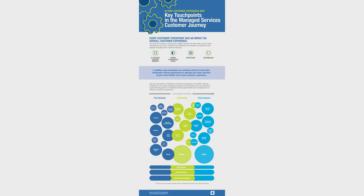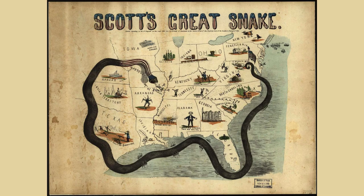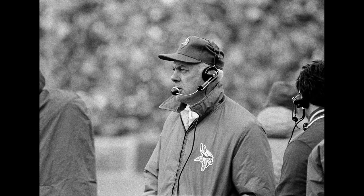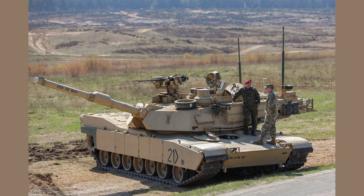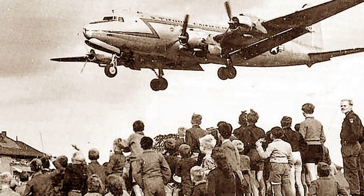The Anaconda Plan. To defeat the Confederacy, the Union developed a military strategy known as the Anaconda Plan, associated with generals such as Ulysses S. Grant and William T. Sherman. The plan involved blockading southern ports, seizing control of the Mississippi River, and cutting off the Confederacy's supply lines.